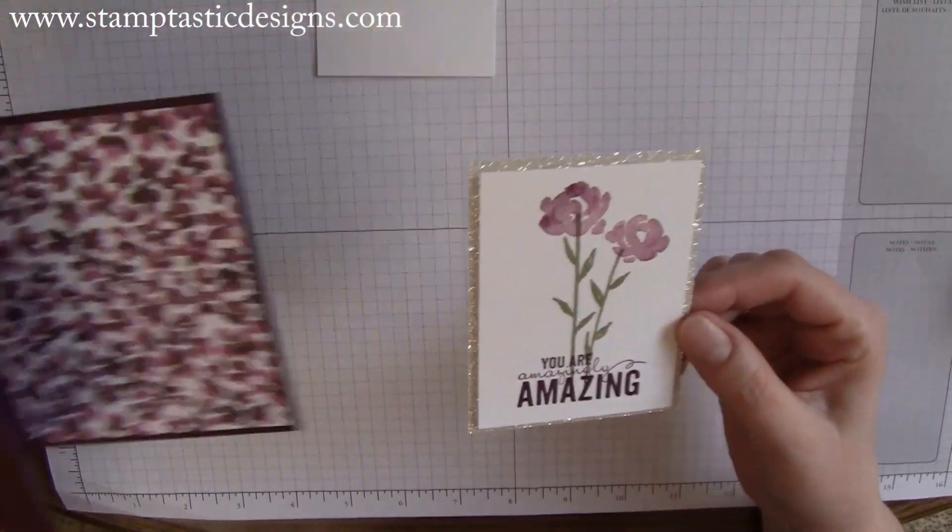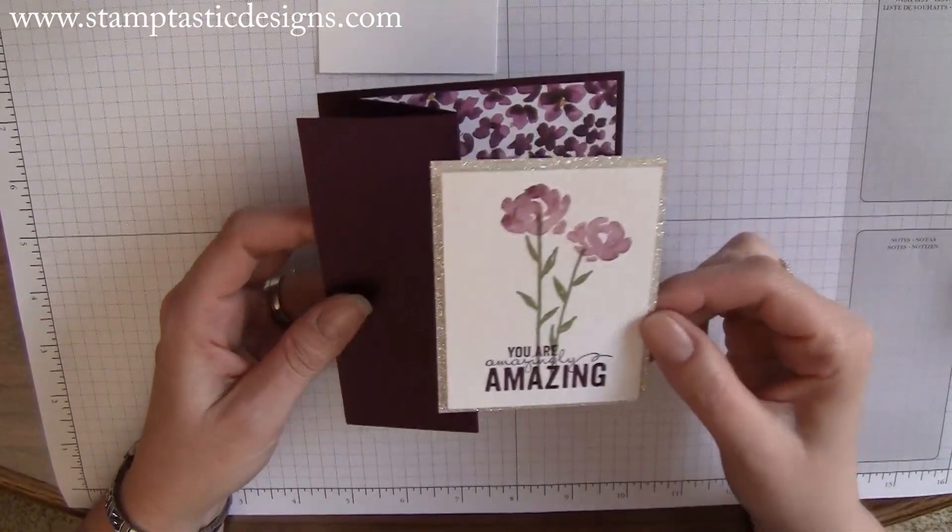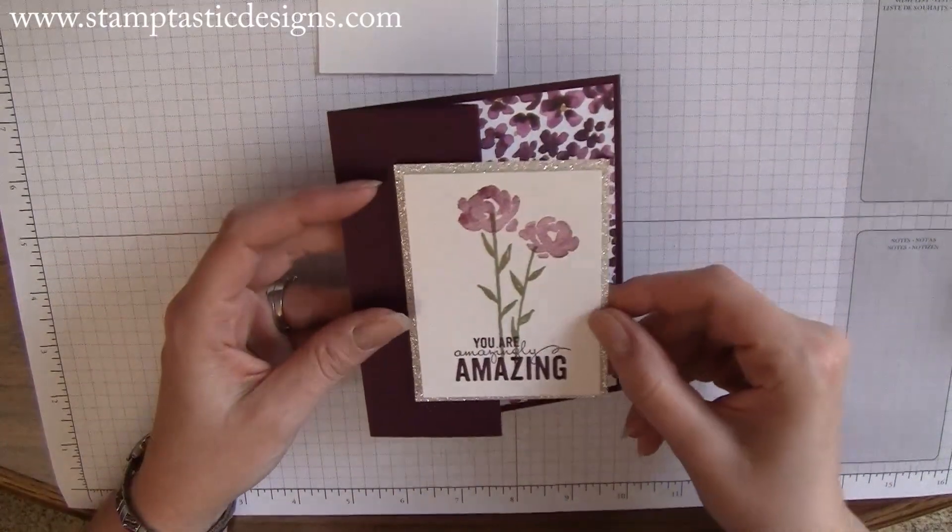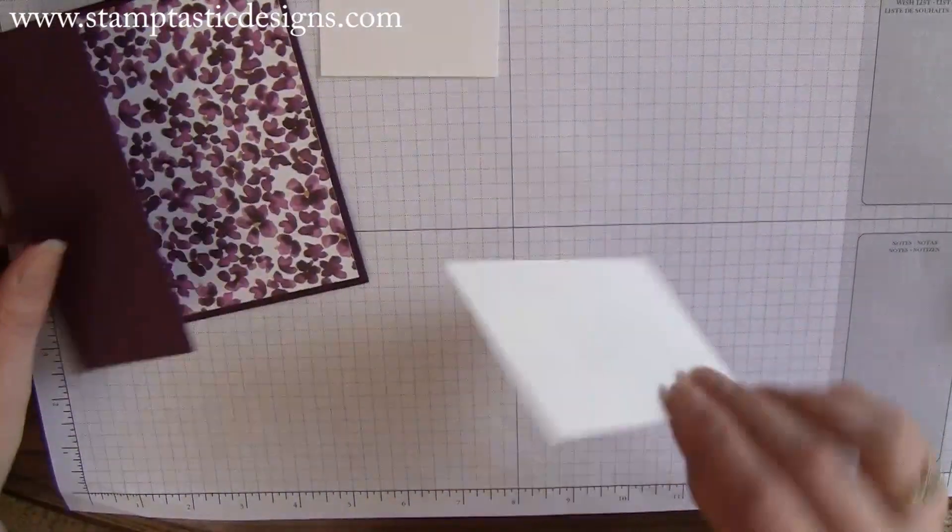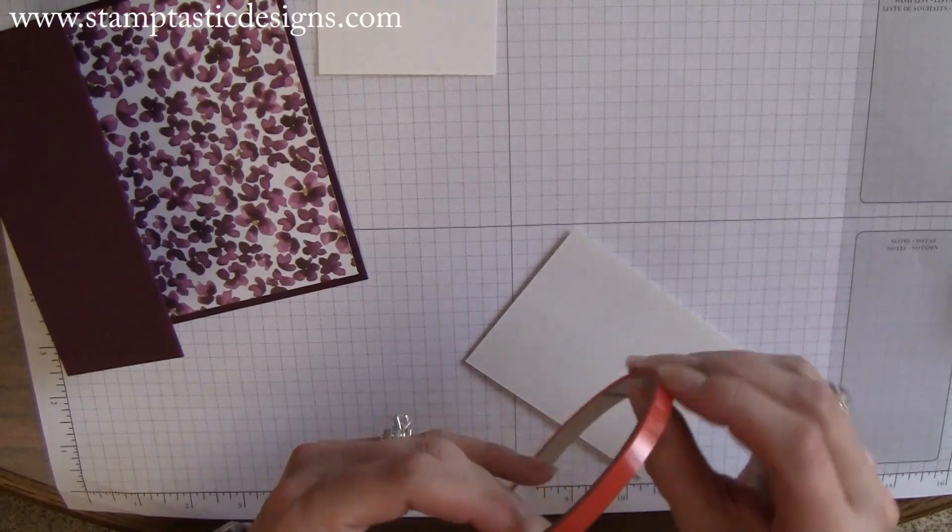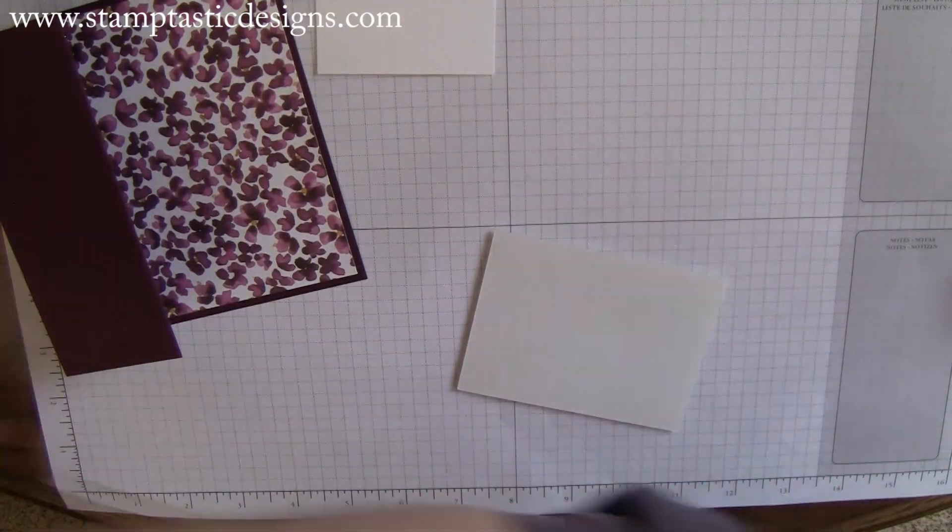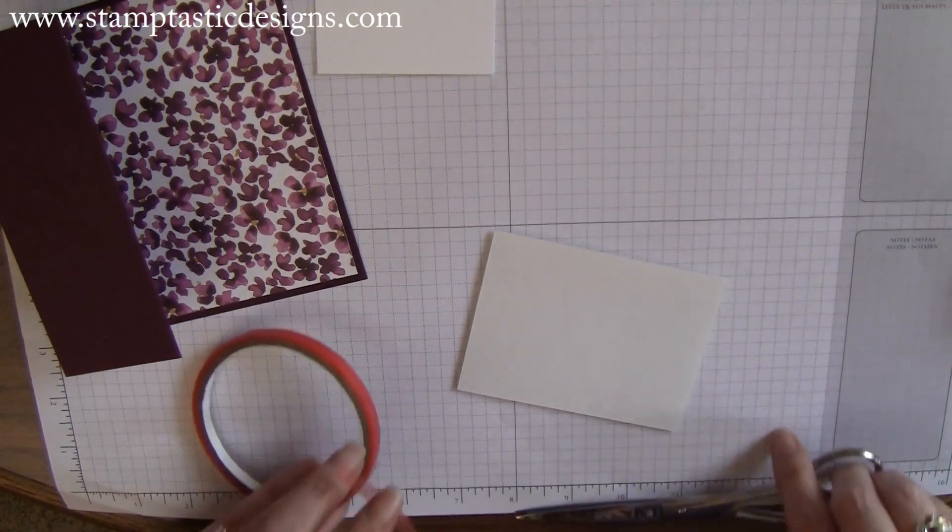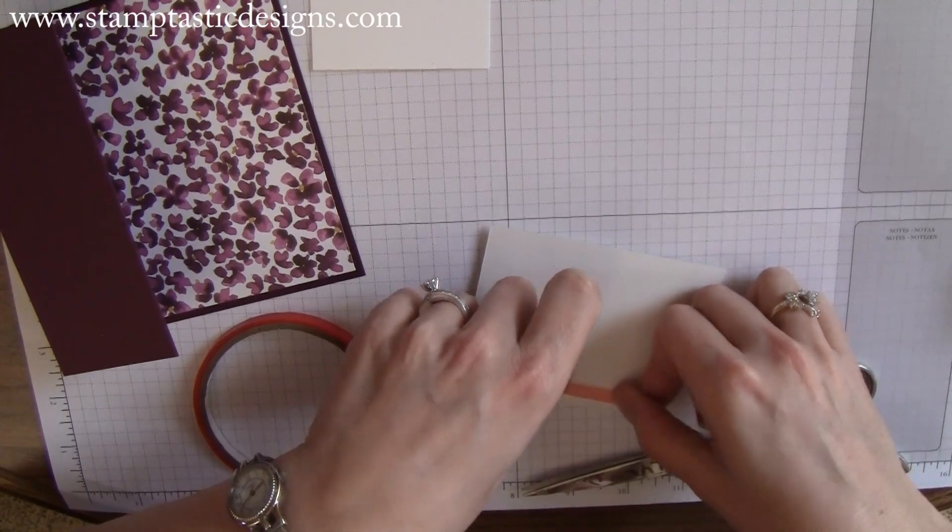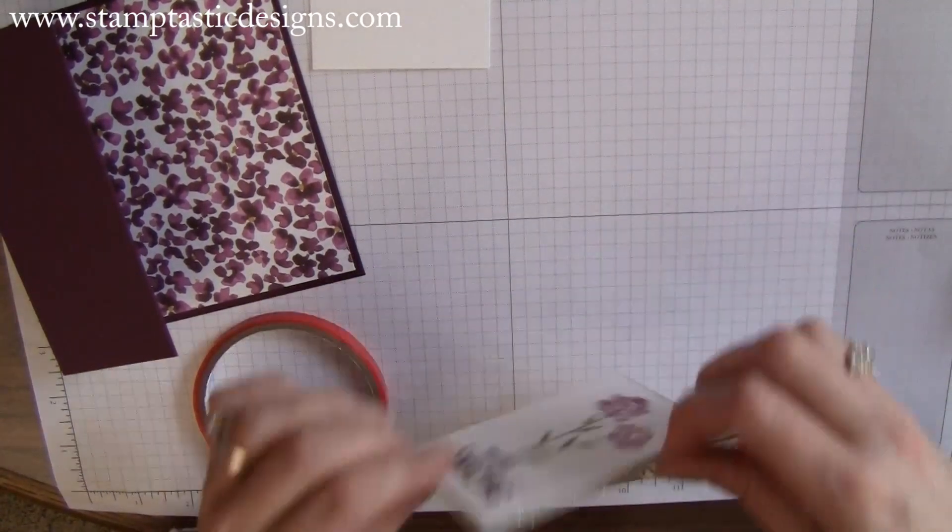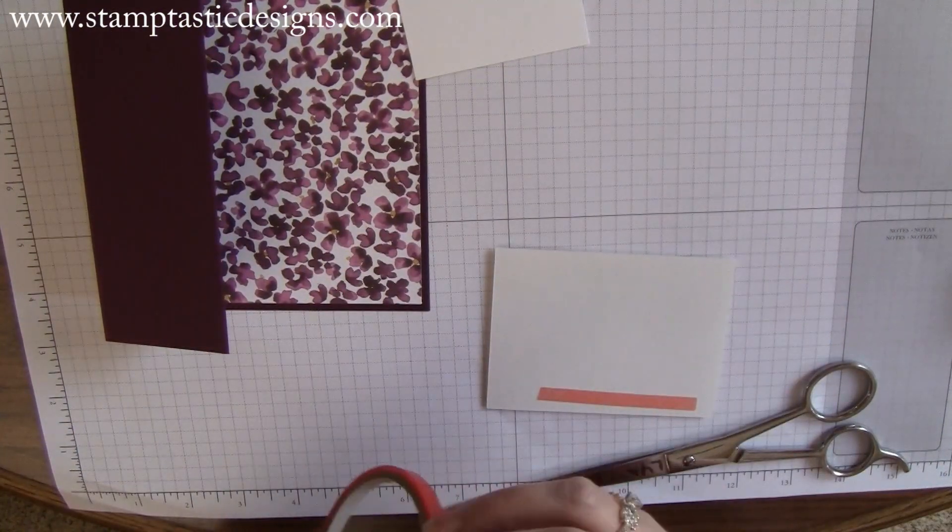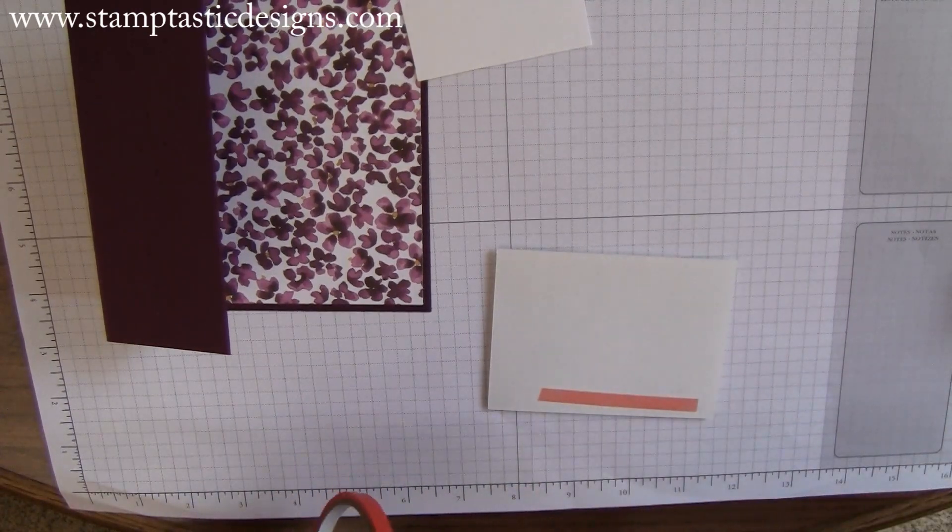Now we have our little decorative stamped piece that's going to go right on the outside flap of the card. I'm going to take some sticky strip, which is double-sided tape, and cut a few pieces. Make sure you're putting the sticky strip on the correct side, otherwise your image will be upside down. I've done that several times.